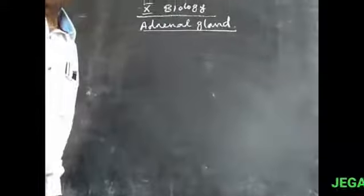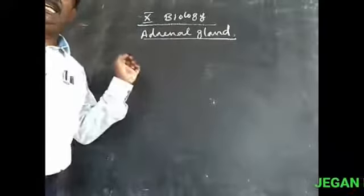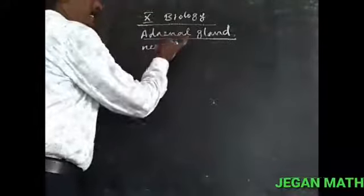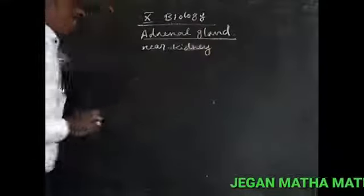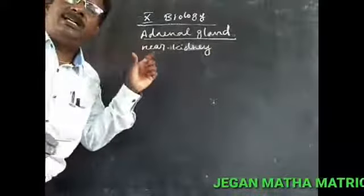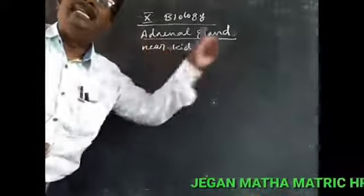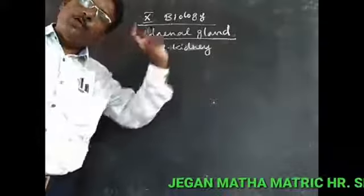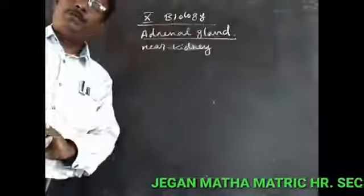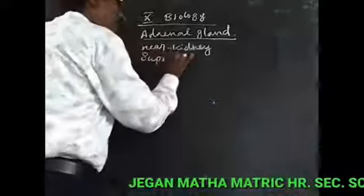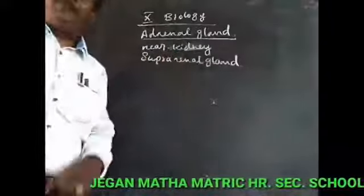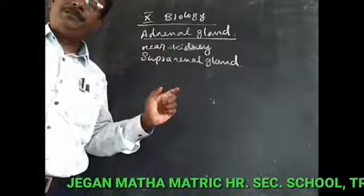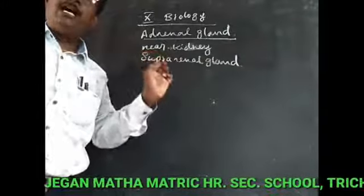In biology, they have an adrenal gland. 'Adrenal' means near the kidney — 'renal' means kidney. The glands are present at the surface of the kidney. It is also called the suprarenal gland, as the glands are present in the posterior part of each kidney.